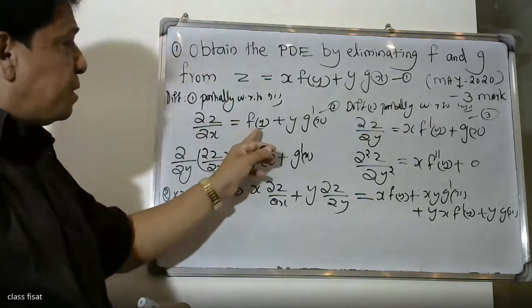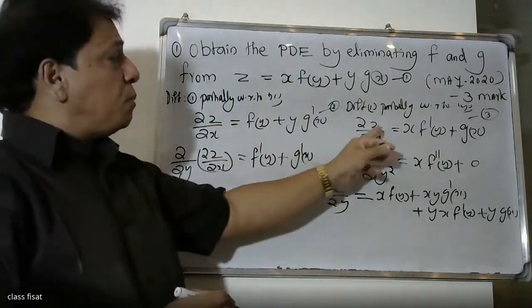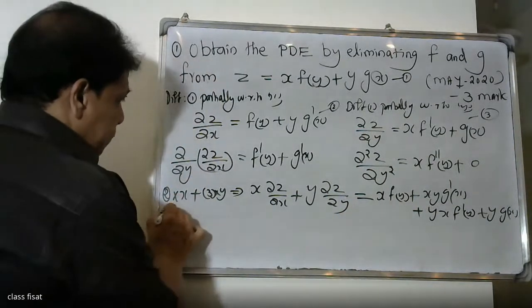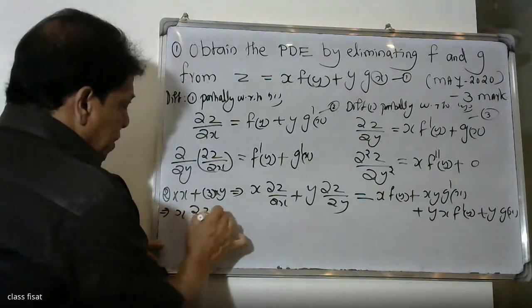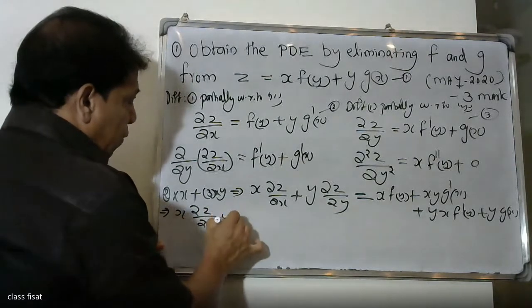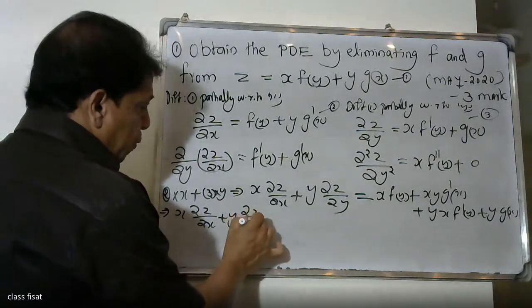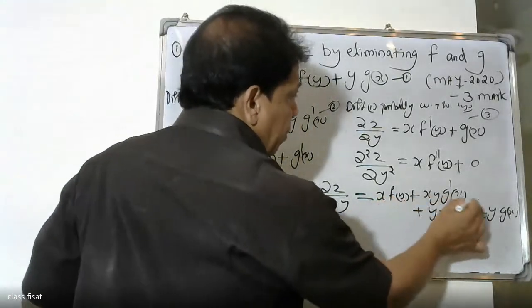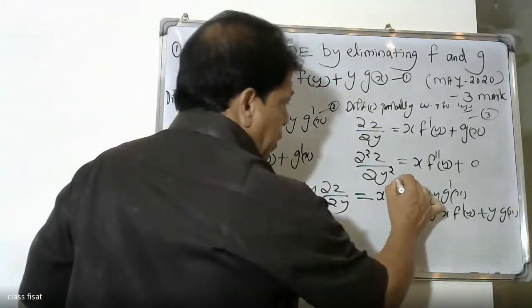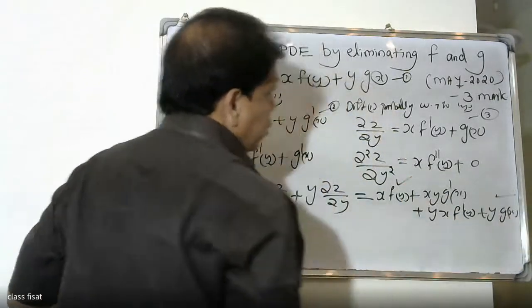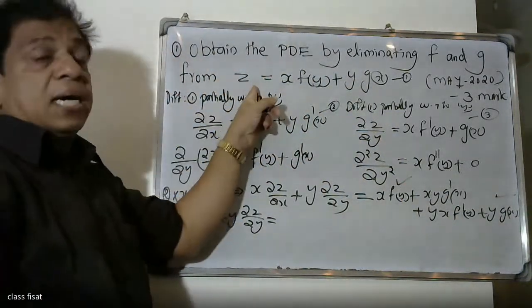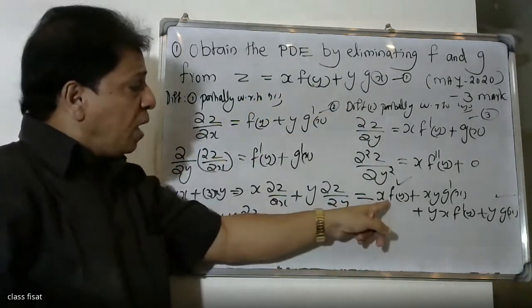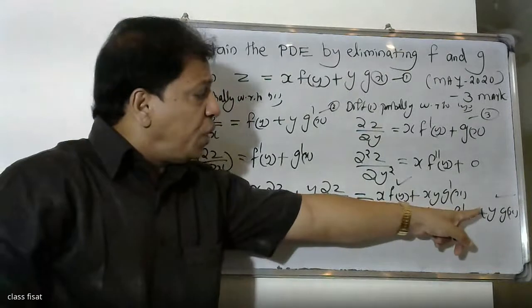The first equation gives us: x into dou z by dou x plus y into dou z by dou y is equal to x into f of y plus y into g of x, plus the remaining terms. Since x into f of y plus y into g of x equals z, we can substitute.